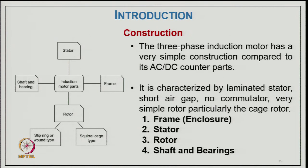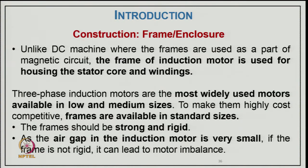Parts of the induction motor include the stator frame, shaft and bearings, and the rotor (either slip ring or squirrel cage type). The three-phase induction motor has very simple construction compared to DC counterparts, characterized by a laminated stator, short air gap, no commutator, and a very simple rotor — particularly the cage rotor. Unlike DC machines where frames are part of the magnetic circuit, the induction motor frame houses the stator core and winding, and must be strong and rigid because the air gap is very small.